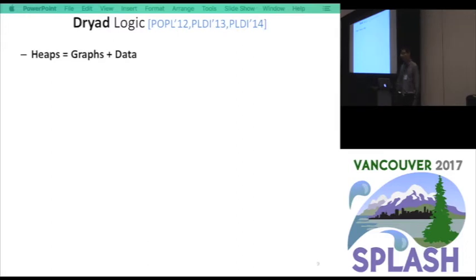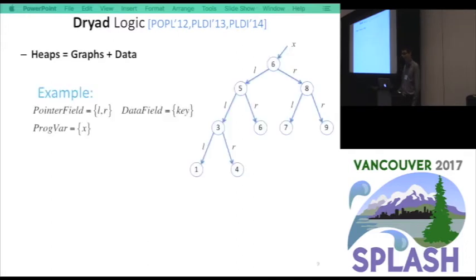We have worked on natural proofs. We developed a logic called DryIt in the past few years. This is a logic for representing heaps. In this logic, the heap is represented using graph plus data. Every record is represented as nodes. And if you have pointer fields like left and right, they are represented as edges on the graph. And data fields will be associated to each node. For example, the right hand side is just binary search tree representation.